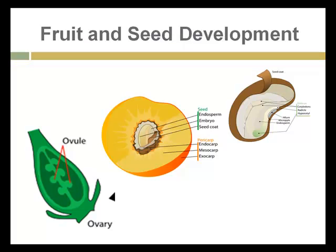Moving along to what happens to the flower as it develops into first a fruit and then seeds: the ovary of the plant contains a number of ovules. The ovary is what forms the fruit, and the ovule is where the seeds form within that ovary. So development occurs from flower to fruit to seed. These labeled diagrams will give you another opportunity to learn important terms, some of which we'll come back to in a few slides.